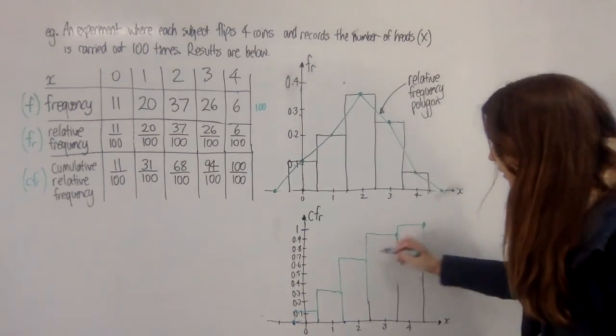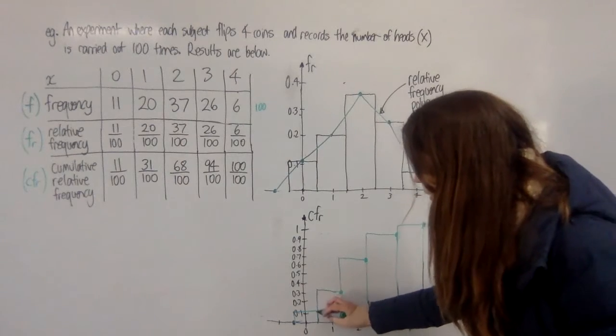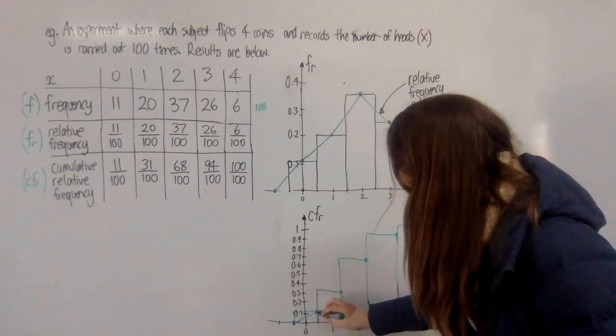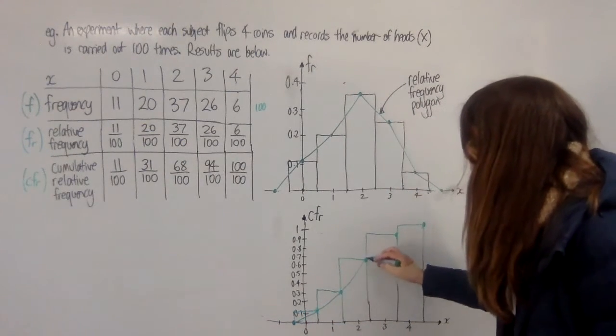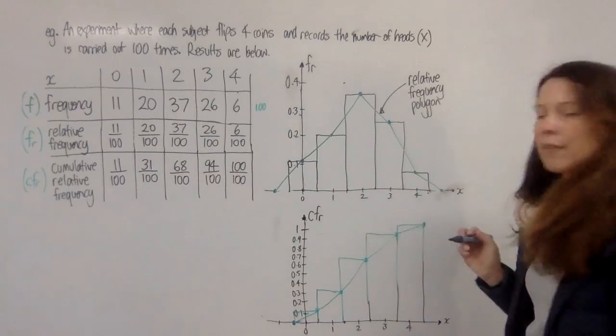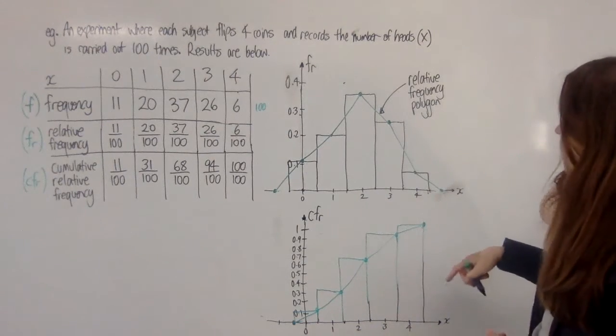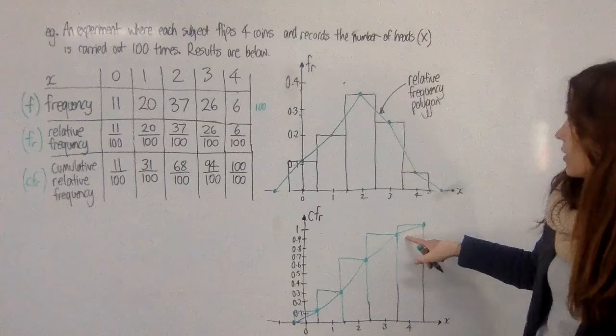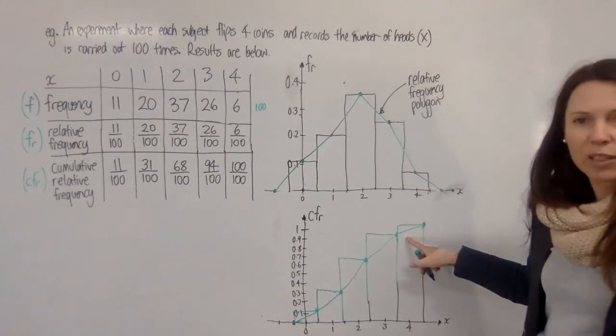When we join together our dots to make our polygon for a cumulative version, we always go to the top right-hand corner of each box and that will give us a cumulative relative frequency polygon.